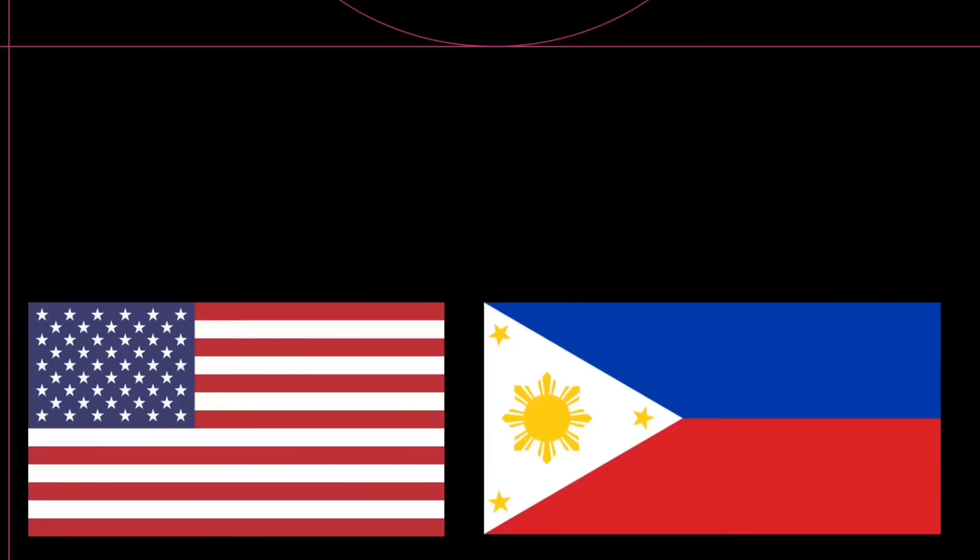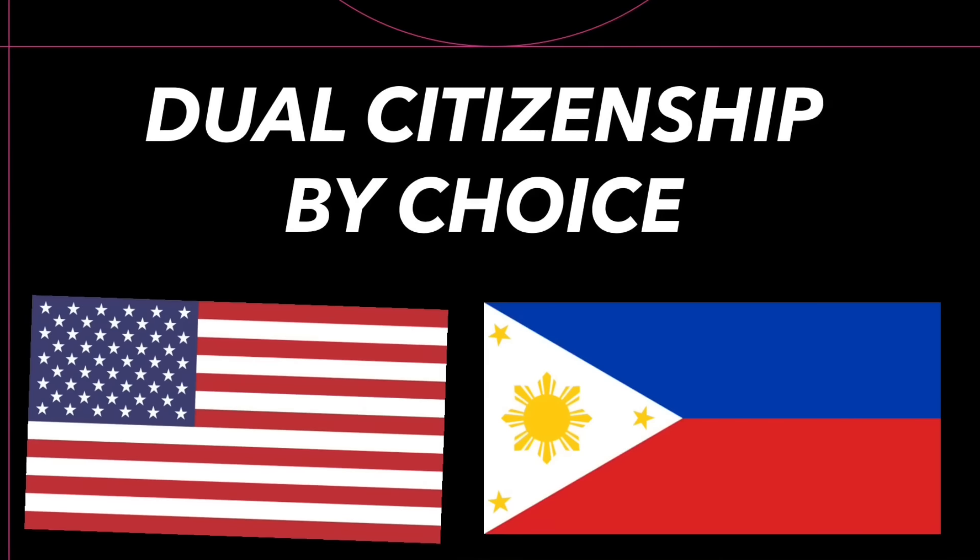These are two situations where one can obtain automatic dual citizenship, also called dual citizenship by operation of law. The first type of dual citizenship is dual citizenship by choice. Who can acquire it? If you are a natural born Filipino, you can acquire dual citizenship, but only specific classes of natural born Filipinos qualify. The key question is: were you born before or after January 17, 1973?